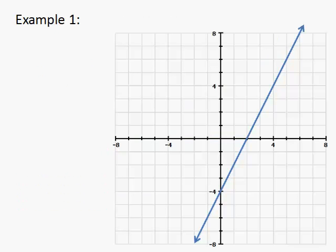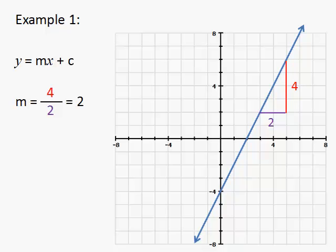Let's see that in practice. We have a line where for every 2 across it goes 4 up. So m is rise over run, 4 over 2, which is 2, and we can put that into our equation.